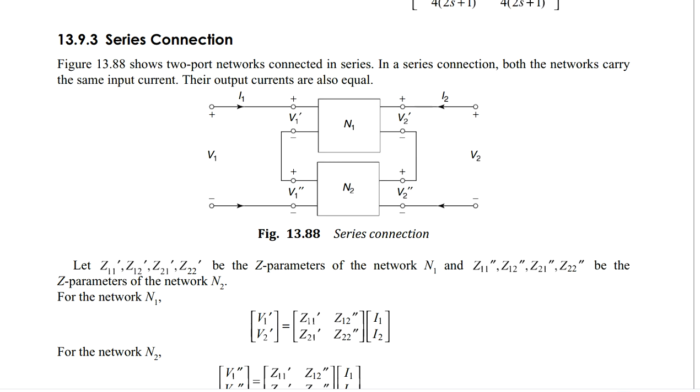For this type of network, we will be having two-port network parameters for both the networks and they are considered as Z11 prime, Z12 prime, Z21 prime, Z22 prime.